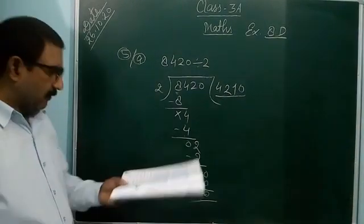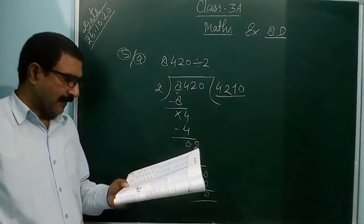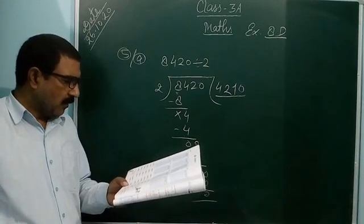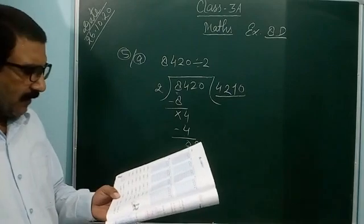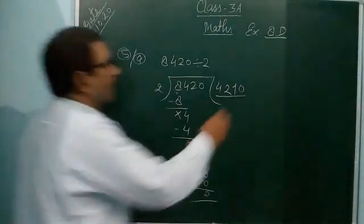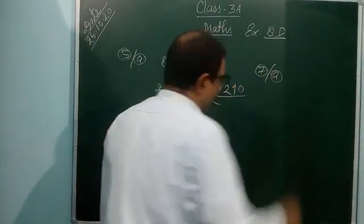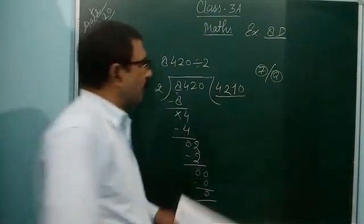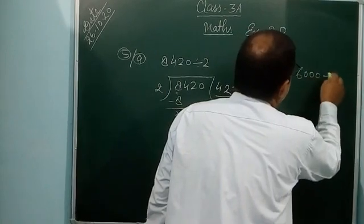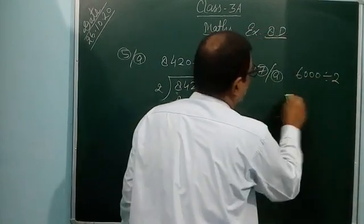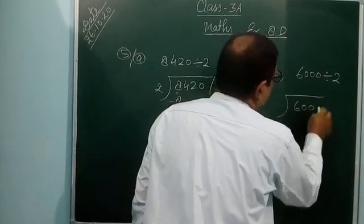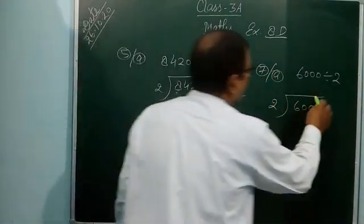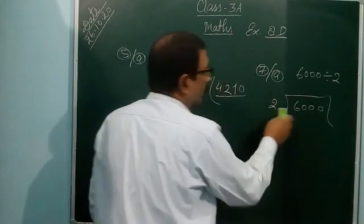In this way you can do question 5b, 5c, and 5d — all the same type. Question 6a, b, c, d are also the same. Question 7a is also a similar type of question. Let's look at question 7a — it is very simple. 6000 divided by 2. You can see 6000 divided by 2.